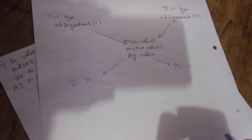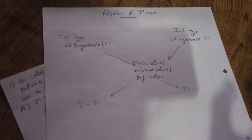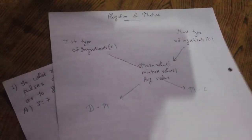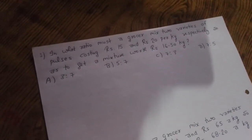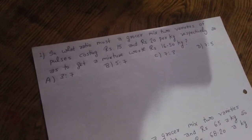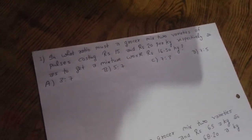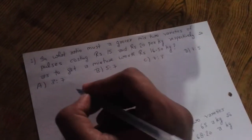So now this is the basic concept of alligation and mixture questions which apply in all types of questions. Let's take some questions, like first question: in what ratio must a grocer mix two varieties of pulses costing Rs 15 and Rs 20 per kg respectively, so as to get a mixture worth Rs 16.50 per kg?